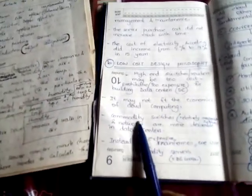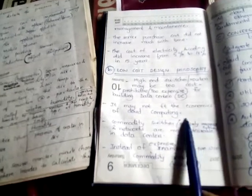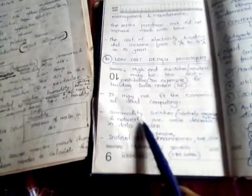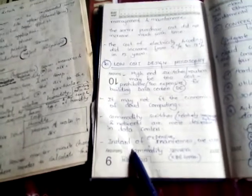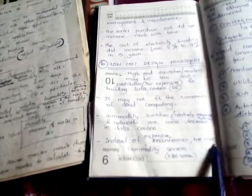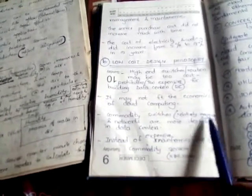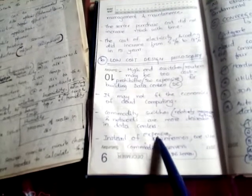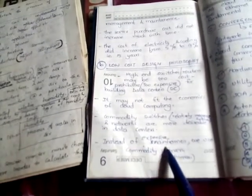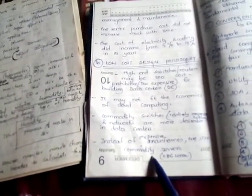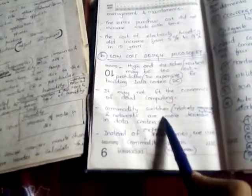Commodity switches, which are relatively inexpensive, are more suitable for designing data centers. Instead of expensive mainframes, we use commodity servers. So commodity switches and commodity servers are preferred.